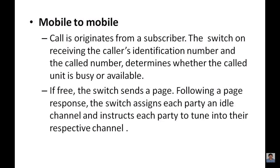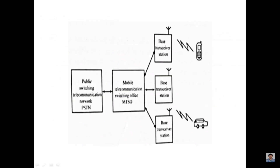This is a mobile-to-mobile communication. I was able to originate a subscriber. That switch is a call to our identification number, so we are able to get any number. That switch is a call to our unit. Now, the switch will send a page and the response will be sent back. We will send a channel to our unit and then a call tone. This is a basic block diagram — this is a BSTN network and this is the MTSO. It will be a transceiver station.